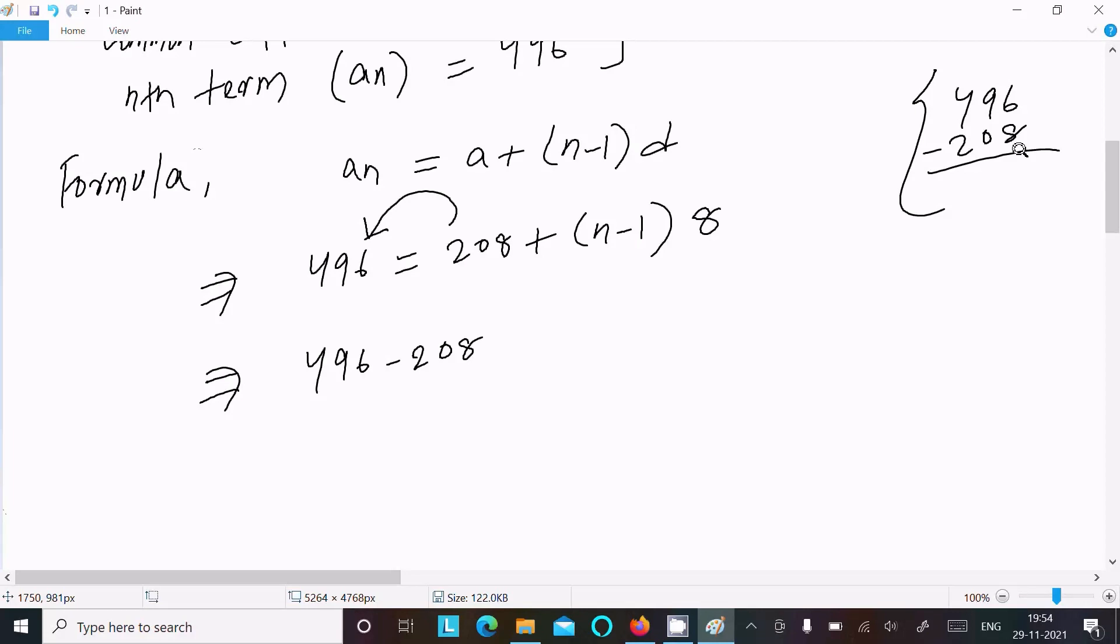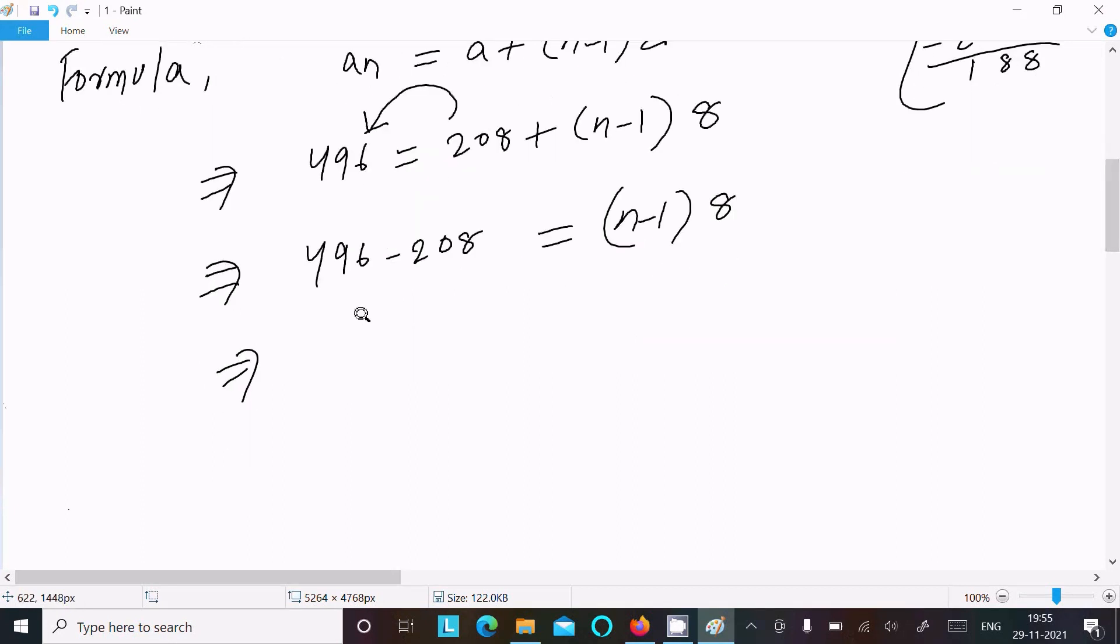After that, this moves on the left. So 496 minus 208, so writing here 496 - 208, subtracting. So this is 8, here 8, 3 minus 2 is 1, and this is (n-1) × 8. So this returns here 288.